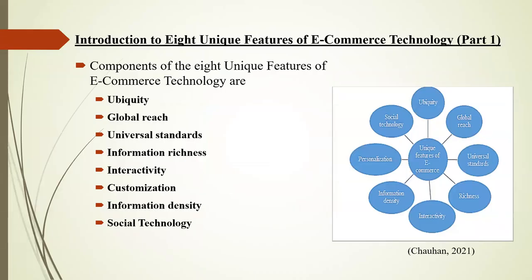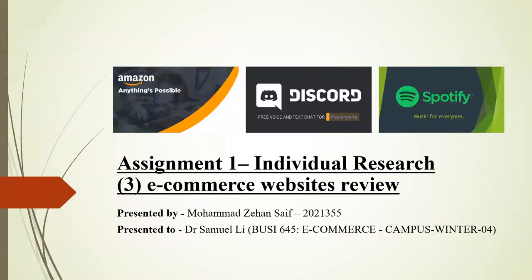The eight features of e-commerce are: ubiquity, global reach, universal standard, information richness, interactivity, customization or personalization, information density, and social technology — all based on an e-commerce platform. My three companies are Amazon as a shopping platform, Discord as a messaging and voice communication platform, and Spotify as a music streaming platform.